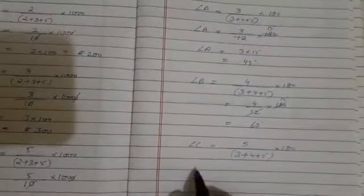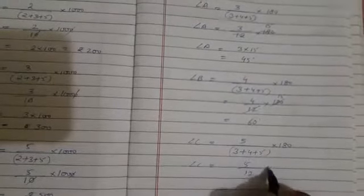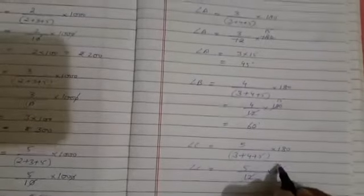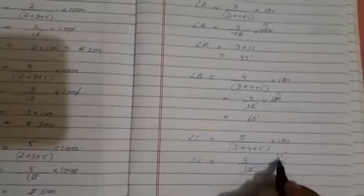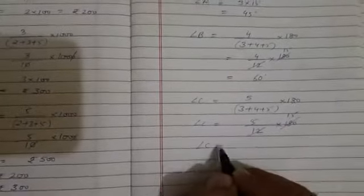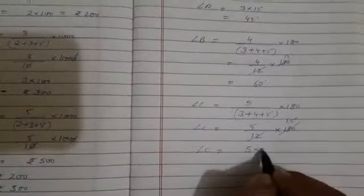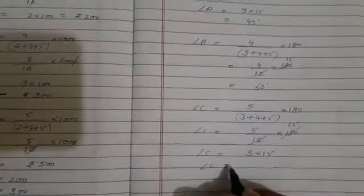Now for angle C we have 5, so 5 upon 3 plus 4 plus 5 into 180. So angle C is 5 upon 12 into 180. We'll divide 180 by 12 and get 15, so angle C is 5 into 15, that is 75 degrees.